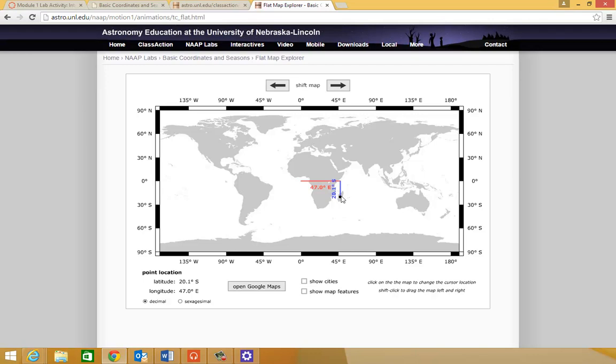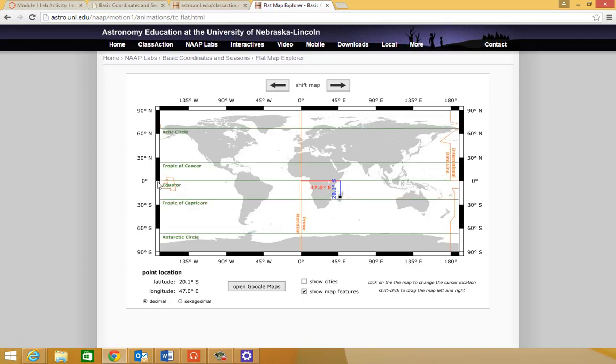The latitude value is how far north or south that spot is from the equator. If I click on the map features, there's my equator, that green line. And sure enough, Madagascar is about 20.1 degrees south of the equator. Longitude is how far east or west your location is from the prime meridian.